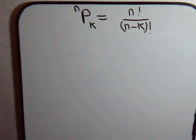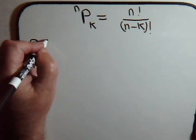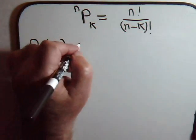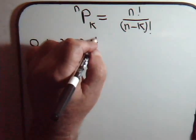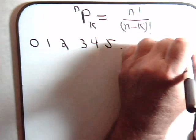Okay, here's a problem that we want to talk about. Let's say that we have these digits: 0, 1, 2, 3, 4, 5, going on up to 9.